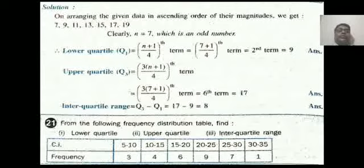So N is odd number, the formula, we have to find out the lower quartile is N plus 1 by 4, so 7 plus 1 by 4, that is 8 by 4 is second term. Second term, you can see, from left, it is given here, 9, so the value of lower quartile is 9.